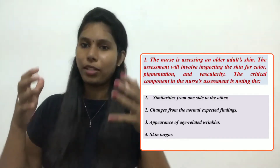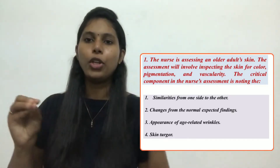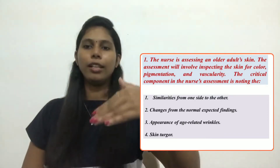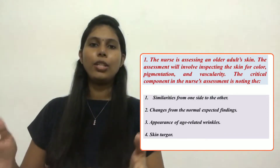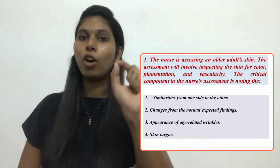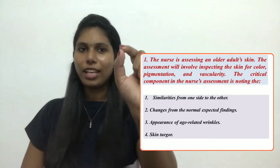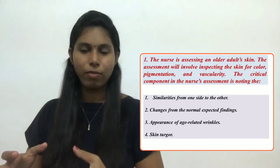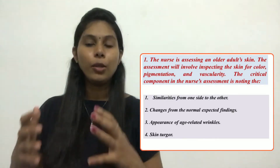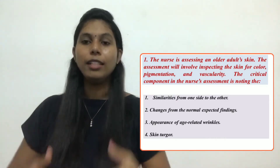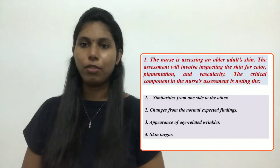Skin becoming darker is also an expected finding as age increases, so we can eliminate that option too. The remaining option is: changes from the normal expected findings. This is exactly right. We know there are certain expected findings when assessing an older client's skin. But anything beyond those normal expected findings is what we should consider a critical component, give priority to, and report to the doctor. That is the correct answer.